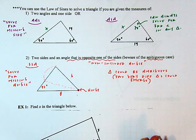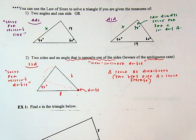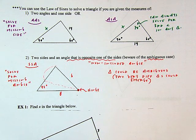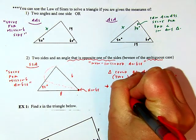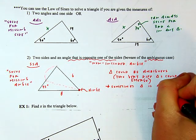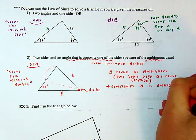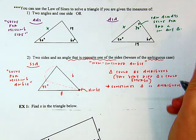So we've always said beware of side-side-angle — this is why: it could be ambiguous. Sometimes the triangle is ambiguous and two very different looking triangles emerge, but sometimes it's not. Today I'll show you when it is versus when it is not.